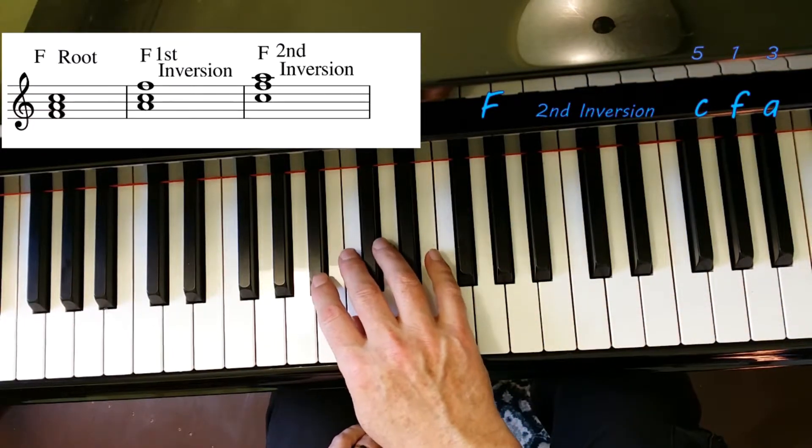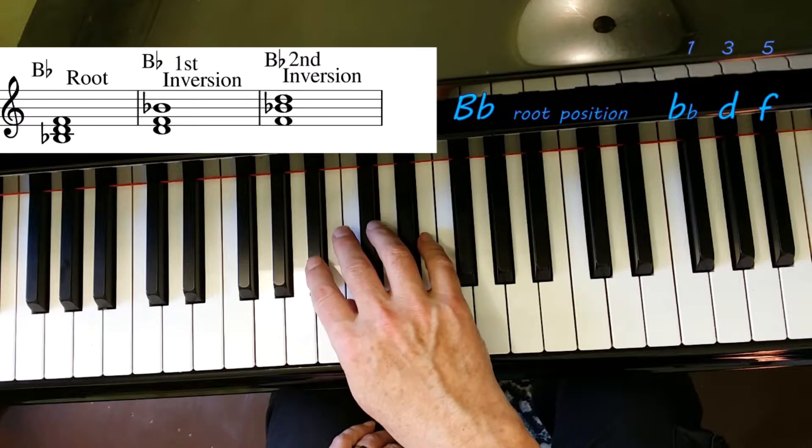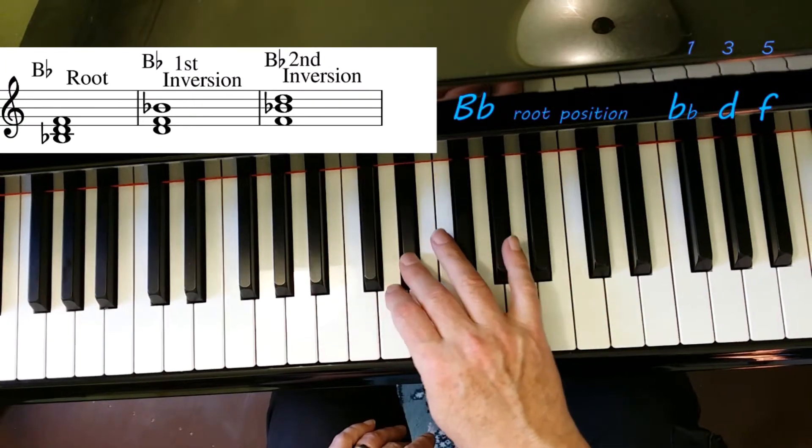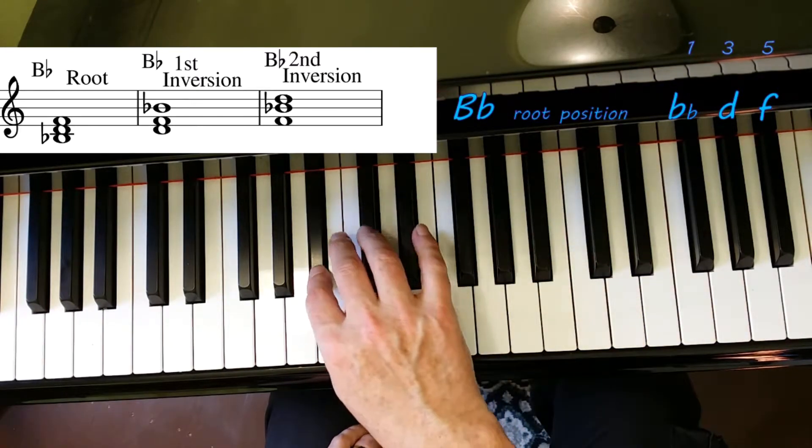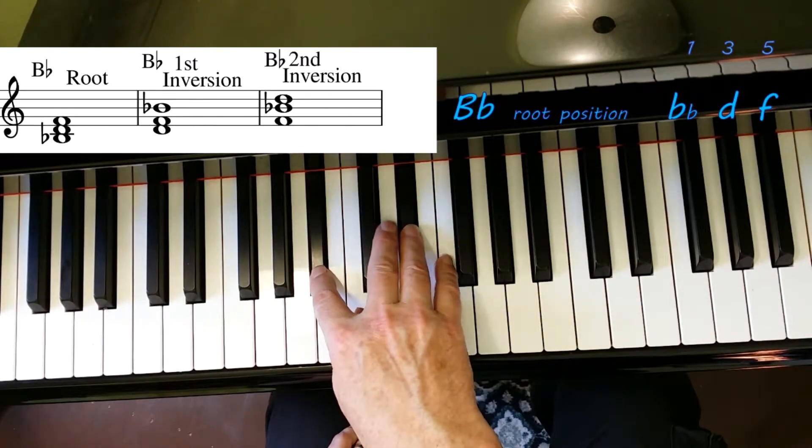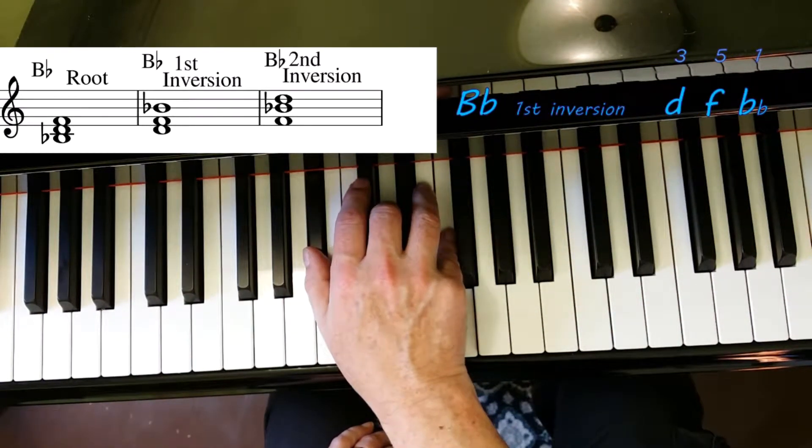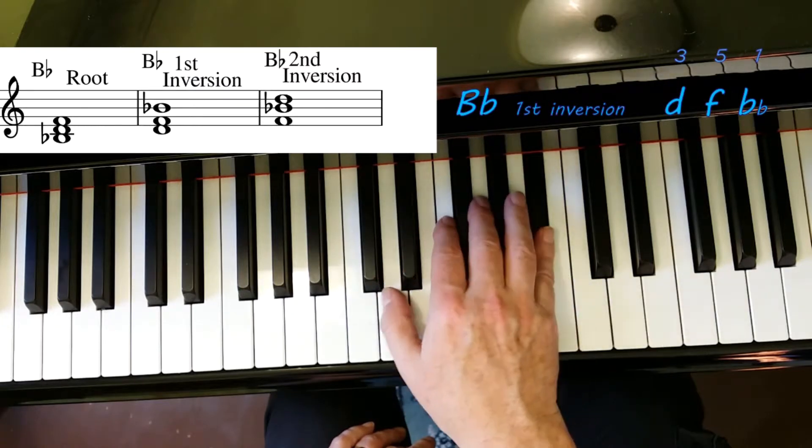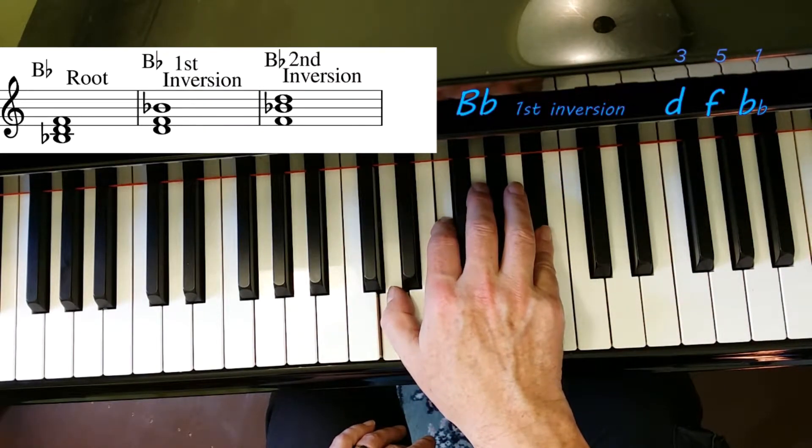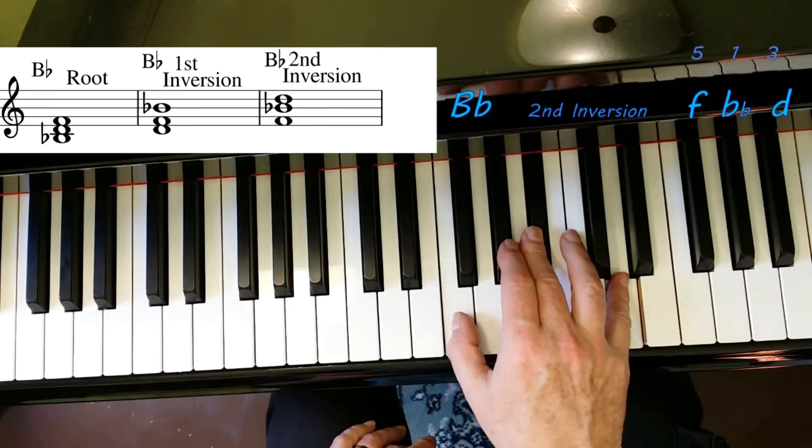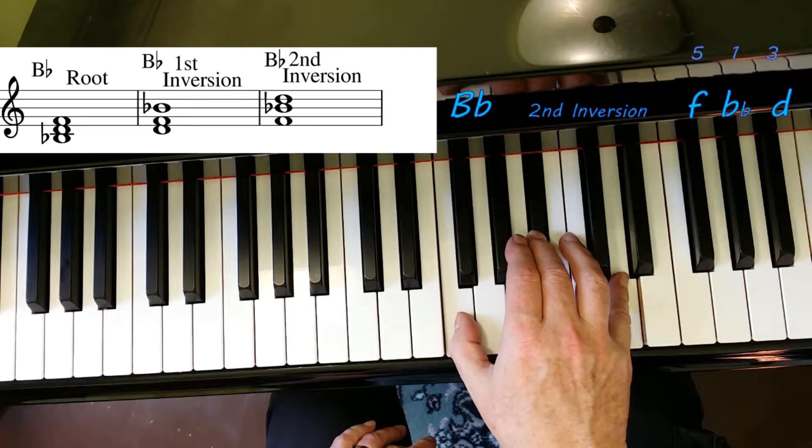Going on to two flats. Slightly different look to the chords because two flats is B flat, starts on a flat note. One, two, three, four, five, six, seven, eight. One, three, five. Probably better fingering to put the thumb, but here it is: B flat, D, and F. Our root position B flat chord. Put the B flat on top: one, three, five. B flat first inversion. Put the B flat in the middle: one, three, five. B flat second inversion.